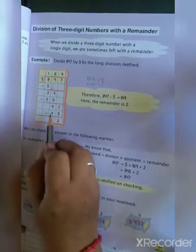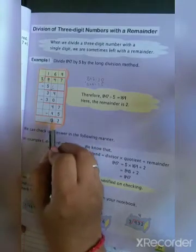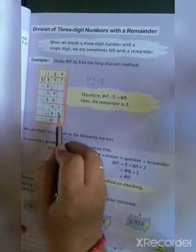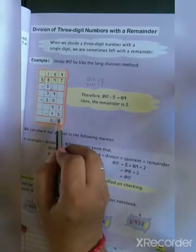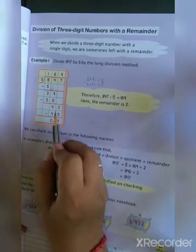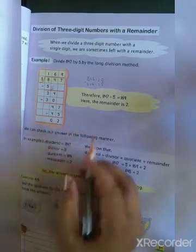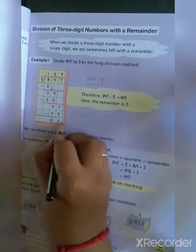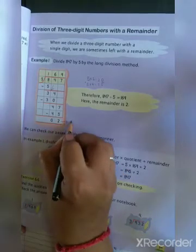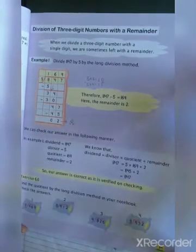Now, 5 nines are 45. So 7 minus 5 is 2 and 4 minus 4 is 0. This is our remainder. It is called our remainder.